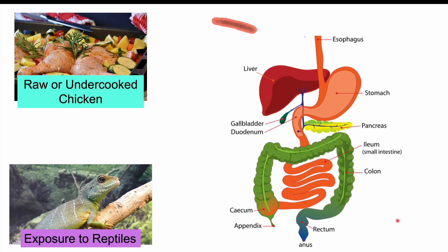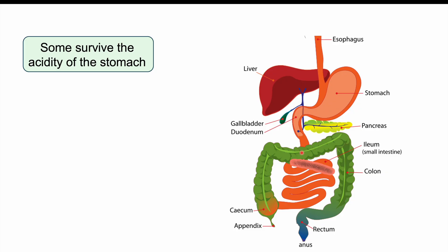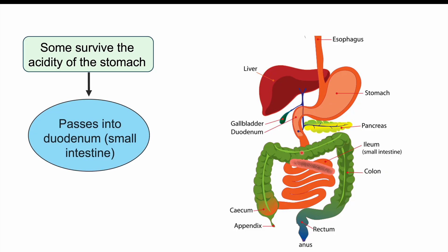The bacteria is most commonly acquired from raw or undercooked food. It enters the gastrointestinal system and passes through the stomach. Because it's acid labile, a lot of it gets destroyed, but if there's enough of it, some can survive and get into the small intestine. A minority will survive the stomach acid and pass into the duodenum, the first part of the small intestine, where it begins to multiply.